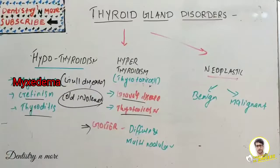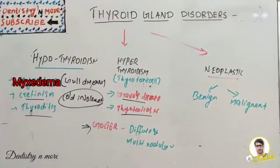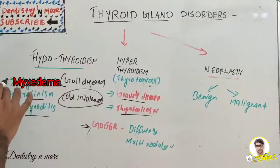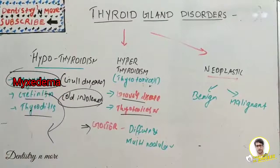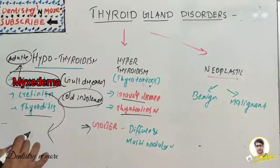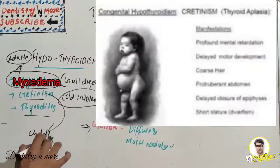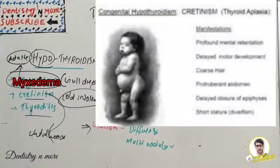Knee jerk reaction time will be increased in myxedema. Now, cretinism is commonly seen in childhood — myxedema is in adults and cretinism in childhood, both due to hypothyroidism. Don't get confused between the two.